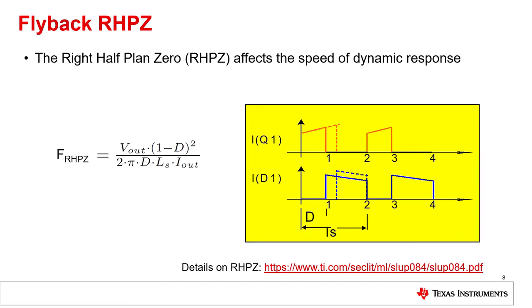When speaking about a flyback converter in continuous conduction mode with a fixed frequency operation, we have to be aware of the right half plane zero. Where does it come from? Let's assume the converter is in steady state but suddenly shall deliver more current to the load. To deliver more current to the output, we need to increase the current in the transformer, and this means longer on time.